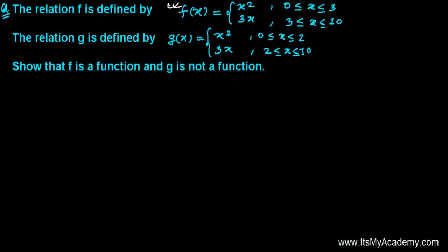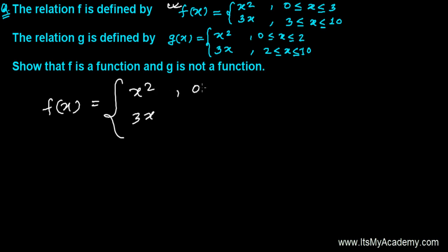First, f(x) is defined as x² when x is greater than or equal to 0 and less than or equal to 3, and f(x) equals 3x when x is greater than or equal to 3 and less than or equal to 10.